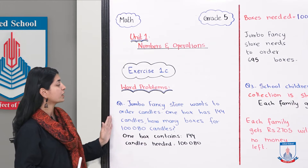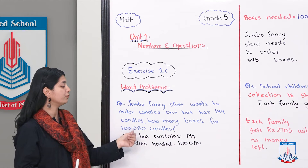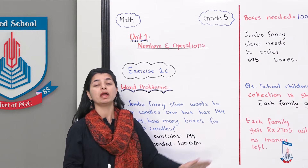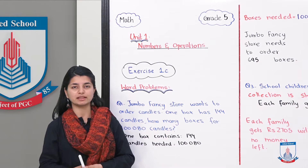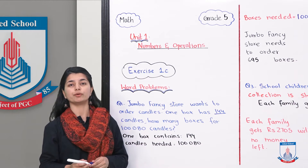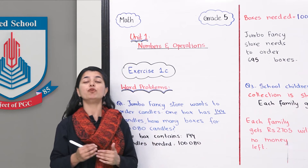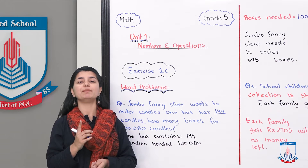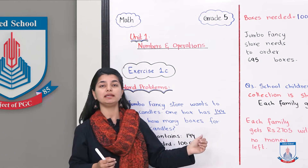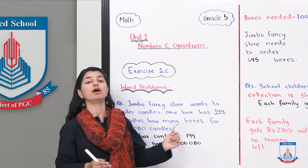The first word problem is: Jumbo fancy store wants to order candles. One box of candles has 144 candles. How many boxes do they need for 100,080 candles? Jumbo wants to know how many boxes they need for 100,080 candles. Because one box has 144 candles, we know the total candles needed are 100,080. So we'll divide to find how many boxes they need.